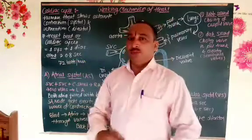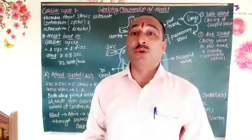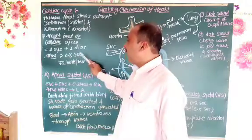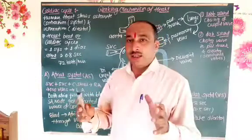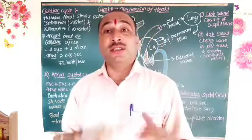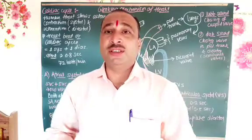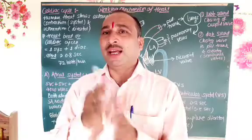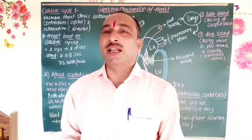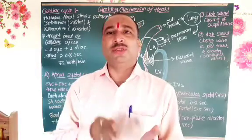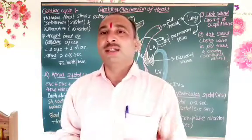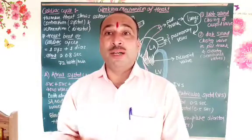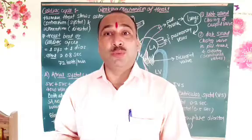The total time required for one cardiac cycle is 0.8 seconds. In 60 seconds, that is one minute, there are 72 heartbeats. So approximately 70 to 72 heartbeats per minute. The total amount of blood pumped is the cardiac output — approximately 70 ml per beat, so 70 into 72.